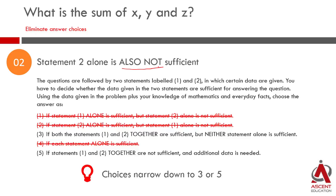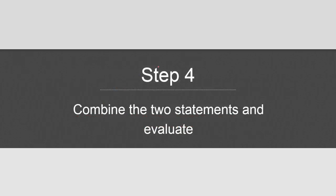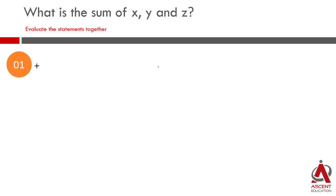So answer choices are narrowed down to 3 or 5. Let's combine the two statements. Combine and evaluate statement 1 and statement 2. Statement 1 is 2x plus y plus 3z is equal to 45. Statement 2 is x plus 2y is equal to 30.